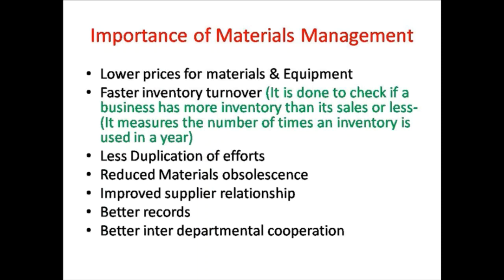The next importance is faster inventory turnover, which measures the number of times inventory is used in a year — done to check if a business has more inventory than its sales or less. Next is less duplication of efforts, reduced material obsolescence or wastage, and improved supplier relationship. When you repeatedly buy from one person, they may start giving you more discounts. The next is better records, as record keeping is very important and is possible only with a proper material management system. And better interdepartmental cooperation — between the estimation department, the site, and other departments — requiring proper coordination.